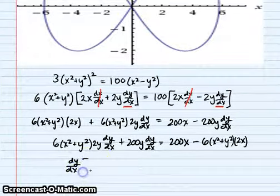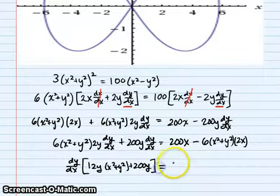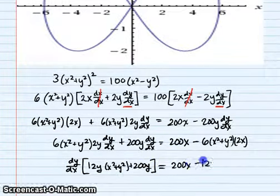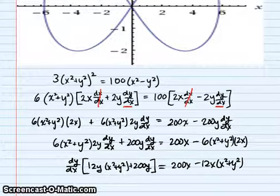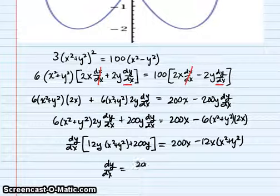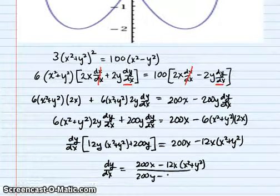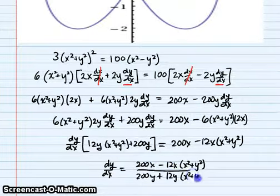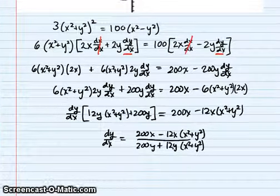Factoring out dy/dx and combining: dy/dx times (12y(x² plus y²) plus 200y) equals 200x minus 12x(x² plus y²). So dy/dx equals (200x minus 12x(x² plus y²)) all over (200y plus 12y(x² plus y²)). We can just leave it like that since it's already in simplified form.